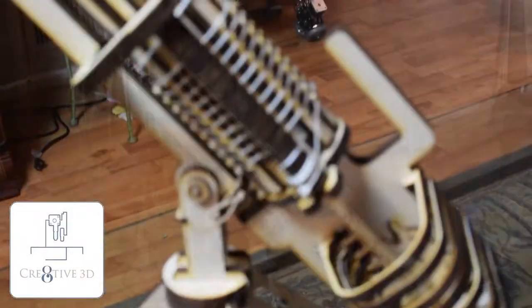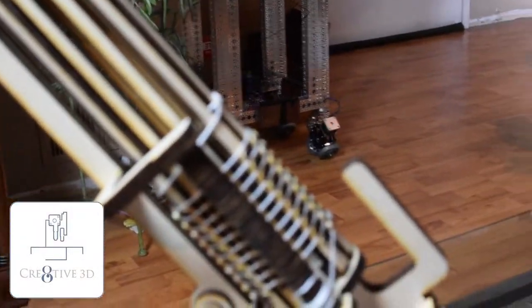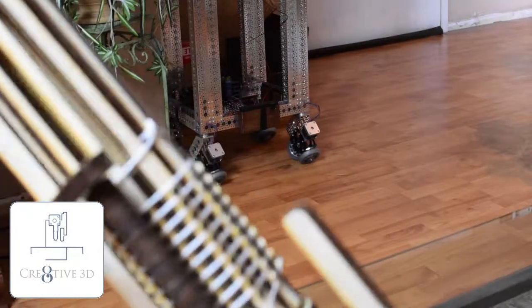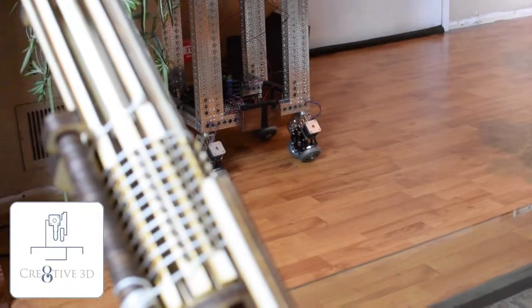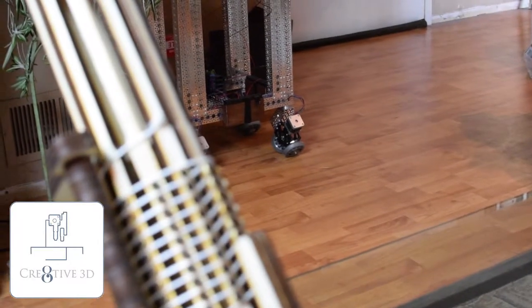Winding the Gatling gun. The Gatling gun will come wound right out of the box, so this way you have a better idea of how the Gatling gun gets wound.